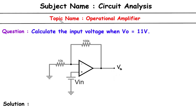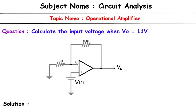Subject: Circuit Analysis. Topic: Operational Amplifier. Question: Calculate the input voltage when Vo is equal to 11V. In this op-amp circuit, we have to find Vin when the output voltage Vo equals 11V. The input is given to the non-inverting terminal, so this is a non-inverting op-amp.